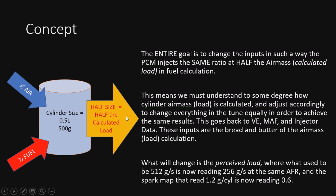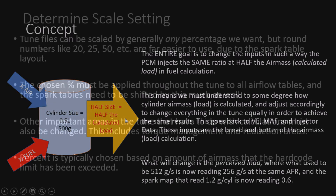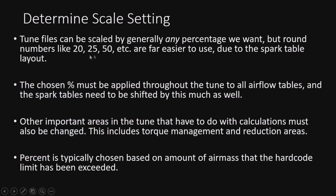This applies across the board to any GM car that's load-based on grams per cylinder, including Gen 4s and later models. We can pick a whole lot of different numbers — basically any percent — but we want to round it off to make the math line up better. 50% is by far the easiest amount to scale, but if you don't have to go all the way to 50%, I don't recommend it, because some tables don't respond well to scaling — particularly idle. At 50% you lose a lot of resolution on your models because you're chopping everything down by half, so you'll only go half as far up the table.